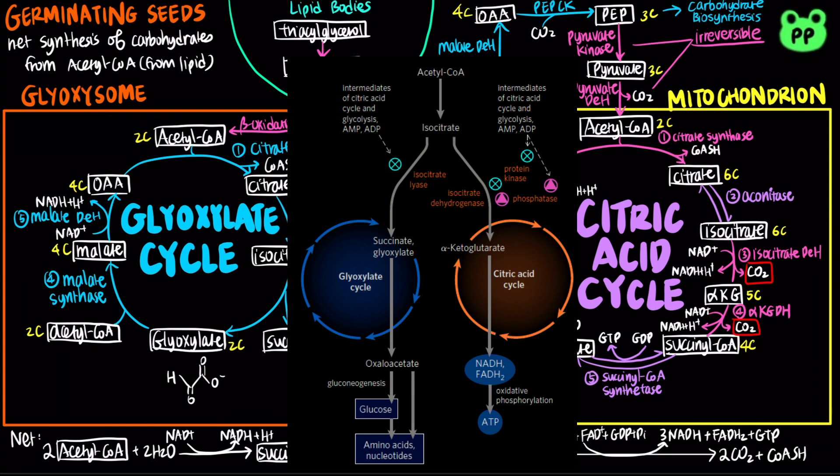When isocitrate dehydrogenase is inactivated by phosphorylation, isocitrate is directed into biosynthetic reactions through the glyoxylate cycle. And when isocitrate dehydrogenase is activated by dephosphorylation, isocitrate enters the citric acid cycle and ATP is produced.